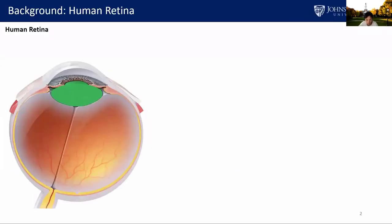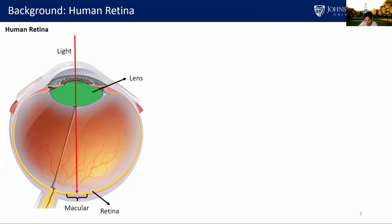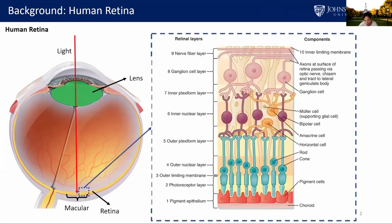We will first introduce the human retina. The retina is an approximately 0.5 millimeter thick layer of tissue, and its center 5 millimeter diameter region is the macula. Light is focused by the lens and received by the cells on the macula, which provides us with detailed vision. Structurally, the retina has 10 distinct layers which have different functionalities as shown in this figure.